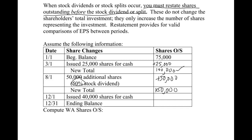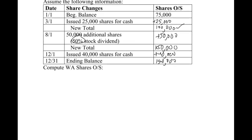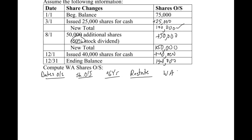Then we issued 40,000 more shares for cash, bringing our total up to 190,000 shares. Now let's scroll down and do our table. We have columns for dates outstanding, shares outstanding, percent of the year the shares are outstanding, and a new column I'm adding called restate. That brings us to the weighted average shares column.